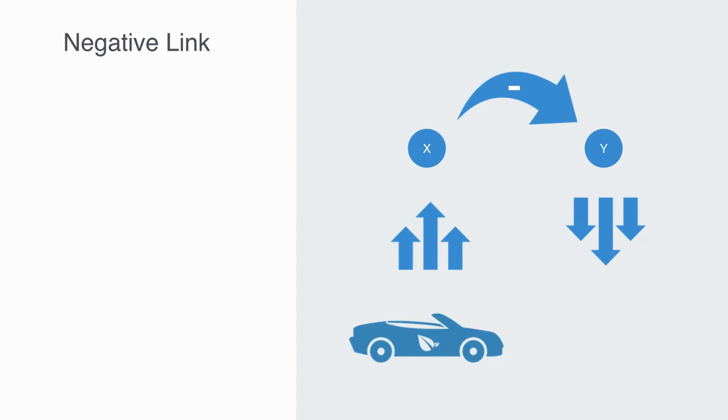A negative causal link means the two nodes change in the opposite direction. That is to say, if the node in which the link starts increases, the other node decreases and vice versa. An example of this might be the relationship between the amount of driving one does and the amount of fuel in your car. The more driving, the less fuel will remain.